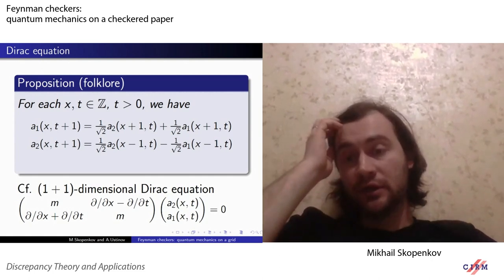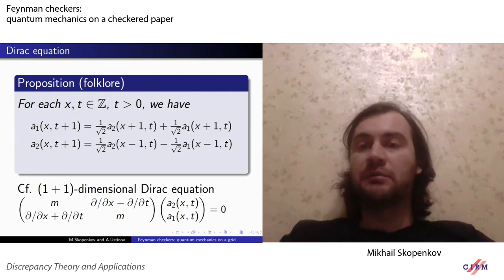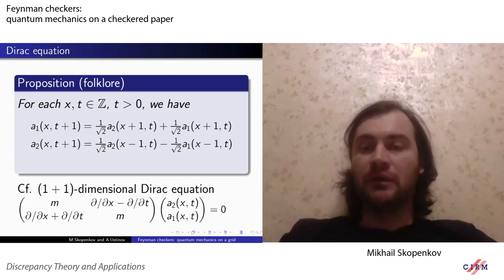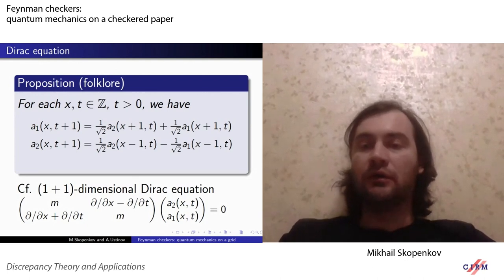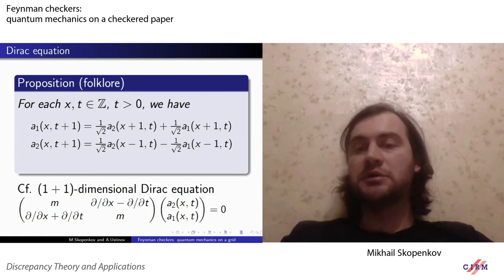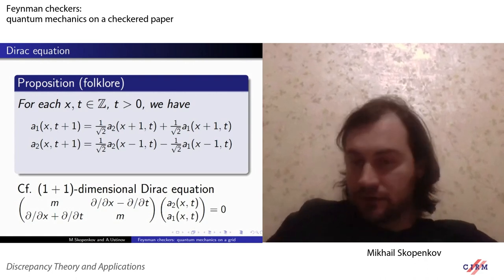This simple recurrence relation has something to do with physics — in fact, it is a discrete analog of the famous Dirac equation. The Dirac equation for an electron moving in one space and one time dimension is a linear PDE for a function having two components a1 and a2. One can see that if the differential operators are replaced by appropriate finite differences, mass m is set to 1, and a normalization factor of 1 over square root of 2 is added, then the continuous Dirac equation turns into this recurrence relation.